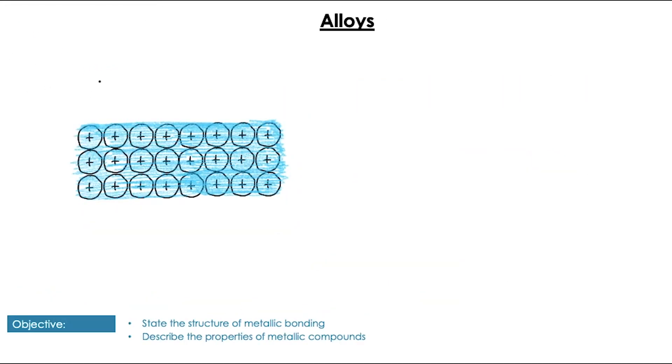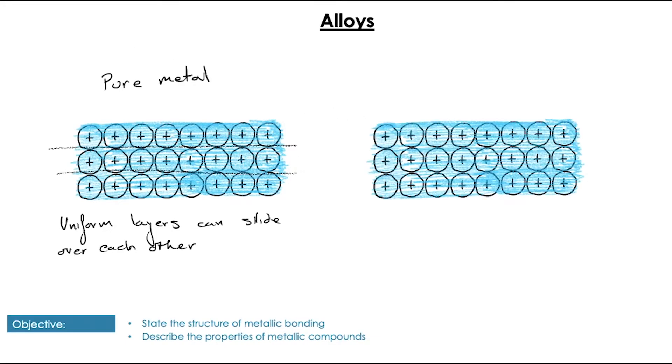So, the model for metallic bonding I've explained so far is really for pure metals only, where there is a uniform size and charge across all of the ions. This means that we form relatively uniform layers in the 3D lattice structure. And these uniform layers can actually slide over each other. And because of this sliding, this affects the property of pure metals, and they can be quite soft.